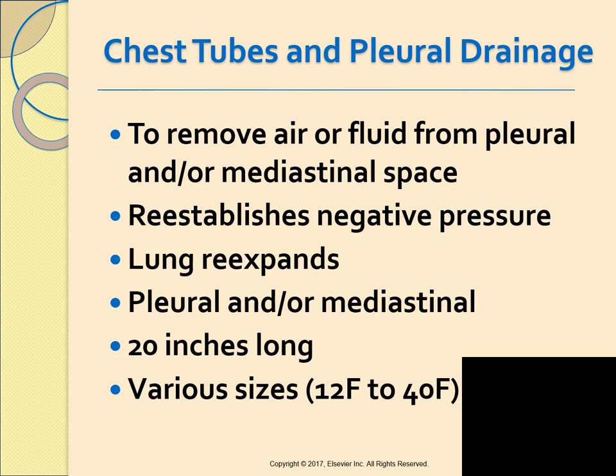Chest tubes can also be inserted in the mediastinal space to drain air and fluid post-operatively. Chest tubes are about 20 inches long and vary in size from 12 French to 40 French — similar to how Foley catheters are labeled. Large tubes are used to drain blood, medium French-sized tubes to drain fluid, and small tubes to drain air. A pigtail tube at 10 French has a curly end and is a safe, effective alternative to larger chest tubes.